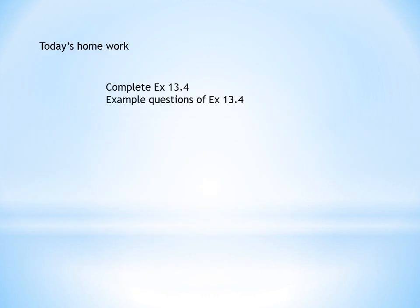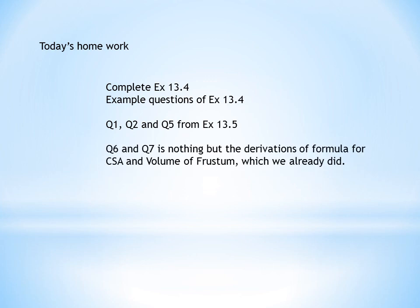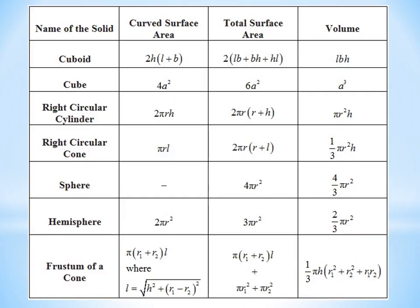Today's homework: complete Exercise 13.4 including the example questions. From Exercise 13.5, do questions 1, 2, and 5 — question 5 you can do yourself. Questions 6 and 7 from Exercise 13.5 are the derivations of the curved surface area and volume of a frustum, which we already covered. Finally, write the summary table of curved surface area, total surface area, and volume for cuboid, cube, cylinder, cone, sphere, hemisphere, and frustum. Take care, bye!